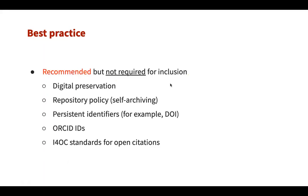The best practice page is a set of things we recommend as good practice but are not required for inclusion. These include digital preservation or archiving, author self-archiving policy, persistent identifiers such as DOIs, use of ORCID IDs, and adherence to the standard for open citations. Note that if you send references to Crossref to get DOIs, you will automatically comply with open citations because Crossref recently made all supplied references open. Answering no to anything on this page will not affect your ability to be included in DOAJ.